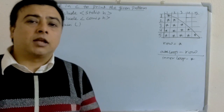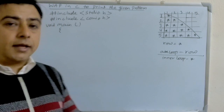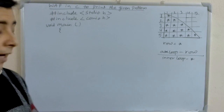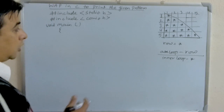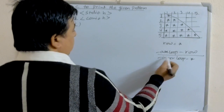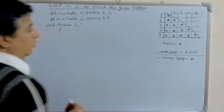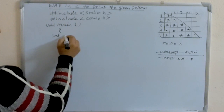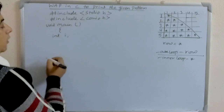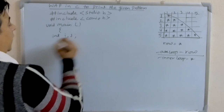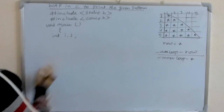Variables are declared in the declaration part with data types. So, here we have two loops — inner and outer. We have to declare int i for the outer loop and j for the inner loop.